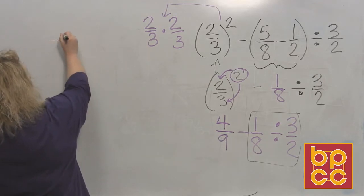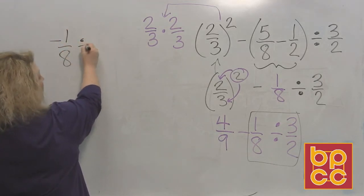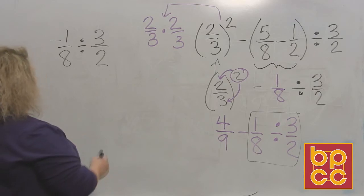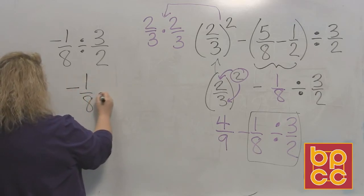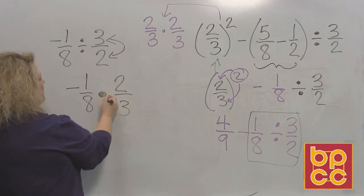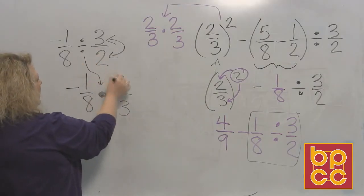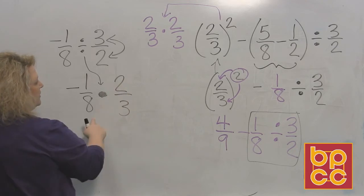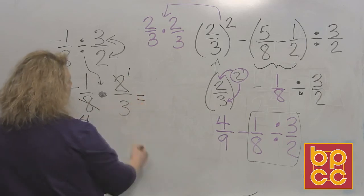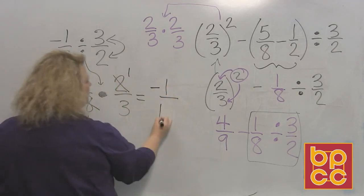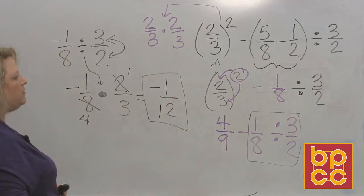I have negative one-eighth divided by three-halves. Well, we've done a previous module where we divided fractions, and it said dividing fractions, easy as pi, just flip the second and multiply. So I change division to multiplication, and I flip the second fraction, and now I just multiply. So I can reduce this 2 and this 8. 2 divides into 2 one time, 2 divides into 8 four times. Once you've reduced your fraction as low as you can, you multiply top times top, which is negative 1, bottom times bottom, which is 12. So that part of my work gives me negative one-twelfth.